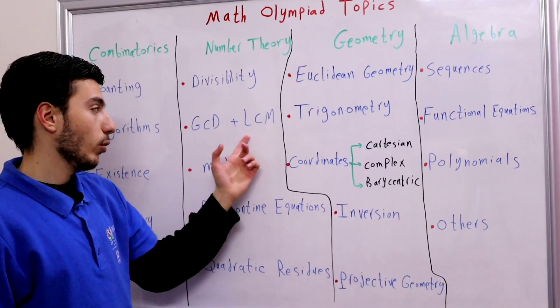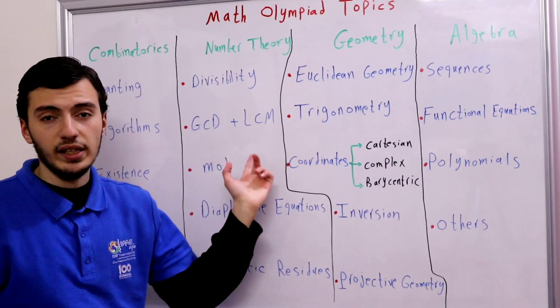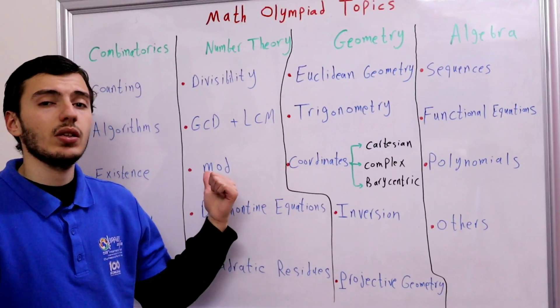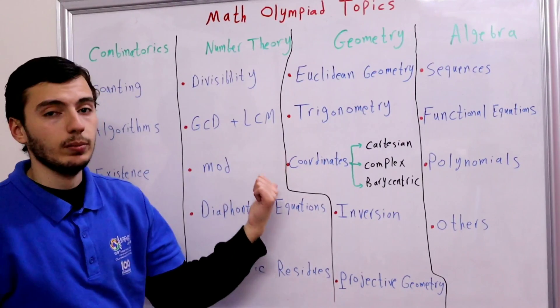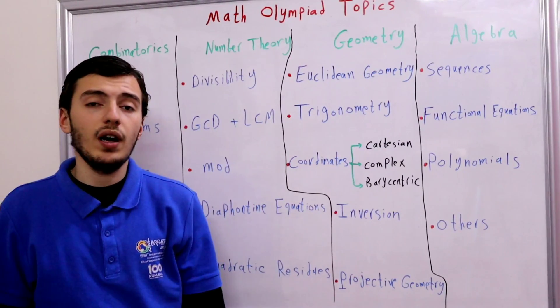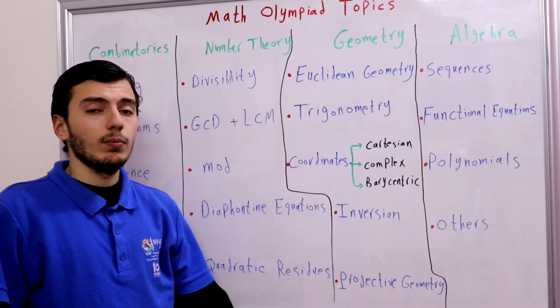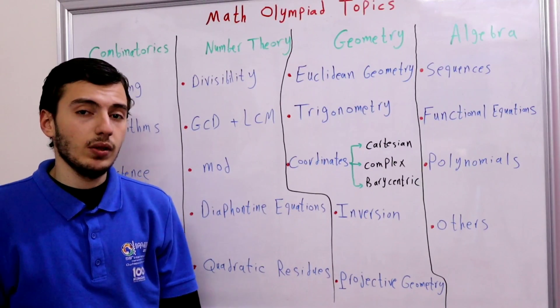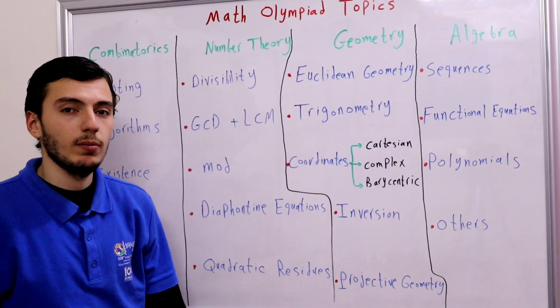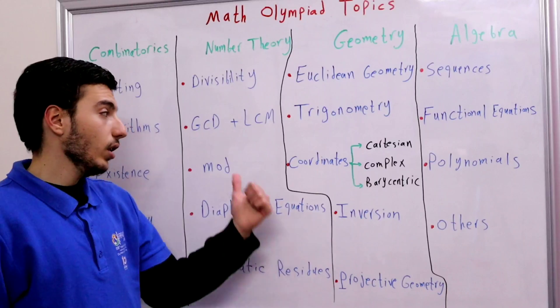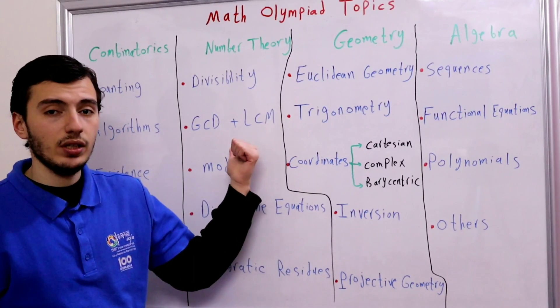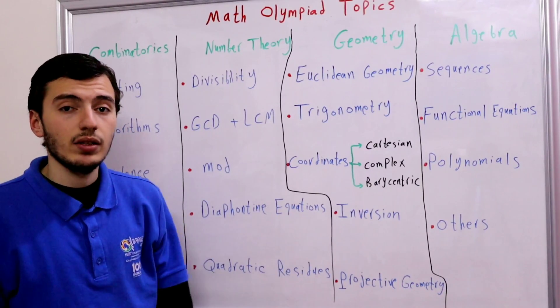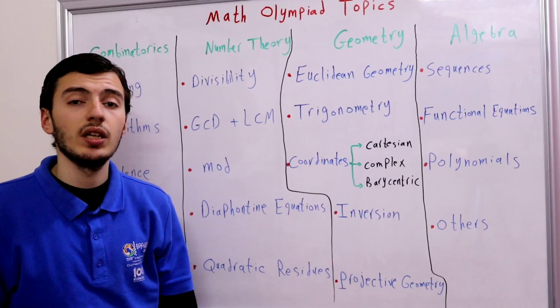The second type of problems is GCD and LCM, the greatest common divisor and the least common multiple. We all know how to find the GCD and LCM to some numbers in school. But don't expect to see this kind of problems in Math Olympiad. Actually you need to learn the properties of GCD and LCM and know how to use these properties efficiently.